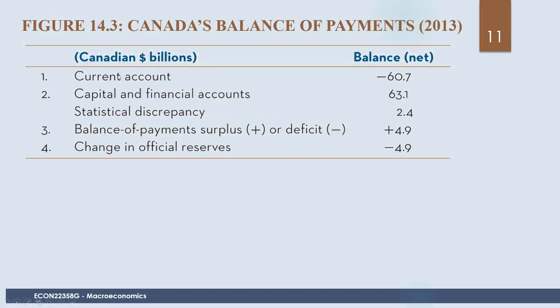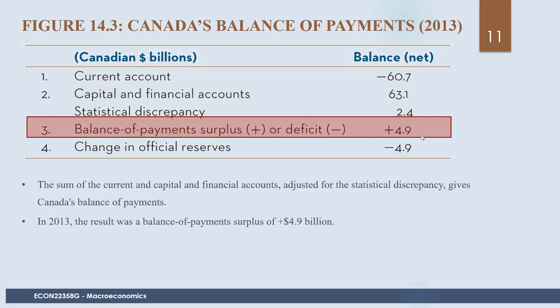For Canada in 2013, the current account is negative $60.7 billion, the capital and financial accounts was positive $63.1 billion. There is also a statistical discrepancy — similar to what we saw with GDP estimates, Statistics Canada does a very good job but these figures are estimates and not perfectly precise. We add that given amount, and when we sum these three figures, we get a balance of payments surplus of $4.9 billion.